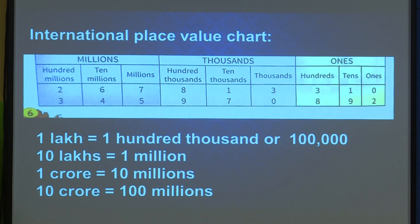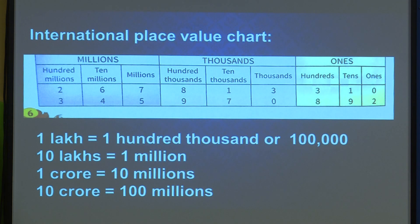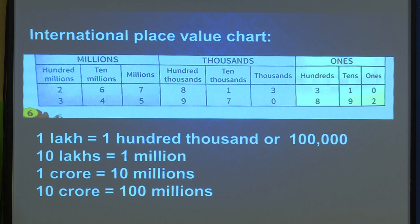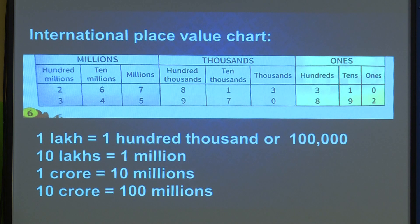The second example is 345,970,892. Try to read this. This is the international system — we read it and write it in words. I have already given the comparison so you will understand both the Indian and international systems.